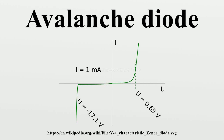In electronics, an avalanche diode is a diode that is designed to experience avalanche breakdown at a specified reverse bias voltage. The junction of an avalanche diode is designed to prevent current concentration and resulting hotspots, so that the diode is undamaged by the breakdown. The avalanche breakdown is due to minority carriers accelerated enough to create ionization in the crystal lattice, producing more carriers which in turn create more ionization.